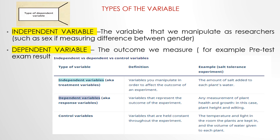The types of variables: the independent variable is the variable that we manipulate as researchers, such as sex when measuring differences between genders. The dependent variable is the outcome we measure — for example, pre-test exam results. So we have independent, dependent, and control variables, each with their definition and example.